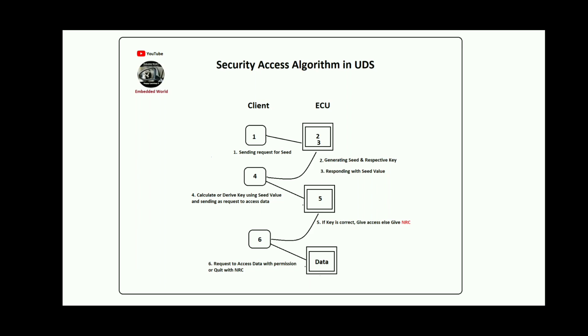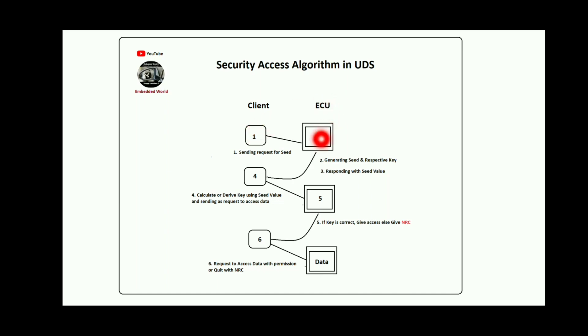Security access algorithm in UDS — the security access service ID is 0x27. On one side is the client side, and on the other is the ECU side. You can refer to the client as the tester and the ECU as the server.